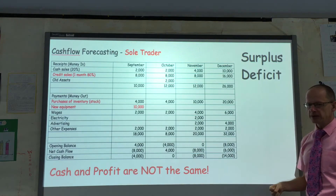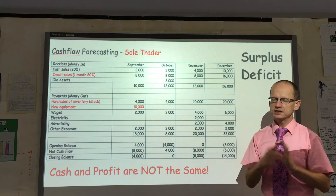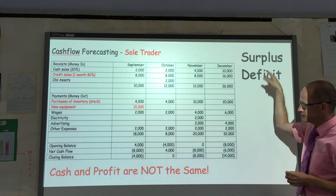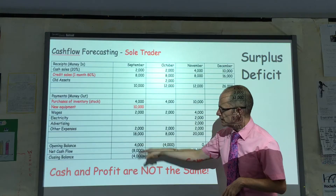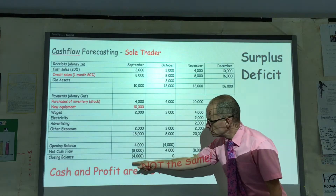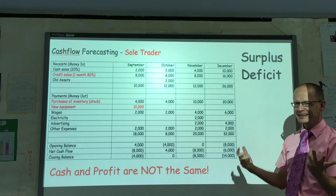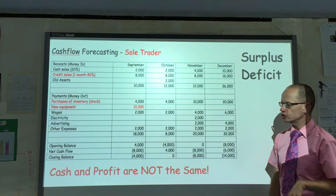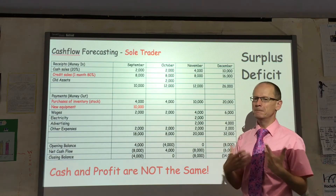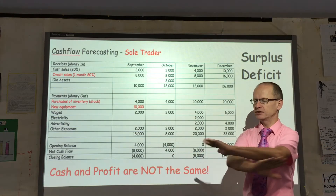You can see that the closing balance for three of the four months is a negative. This is where we want to start using words like surplus and deficit. The business starts September with a 4,000 cash surplus at the bank. The closing balances for September, November, and December are minuses — we will call those deficits. Do not say that the business is making a profit or a loss.